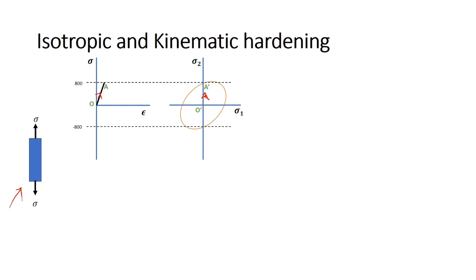Let's further load the specimen to B and see how the yield surface evolves under isotropic hardening. Isotropic hardening is characterized by uniform yield surface expansion. At point B, the yield surface will look like this. Uniform yield expansion results in the symmetry of tension and compression behavior. You can see that both the tensile yield strength B' and compressive yield strength C' have the same magnitude.